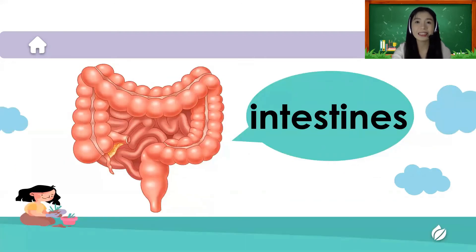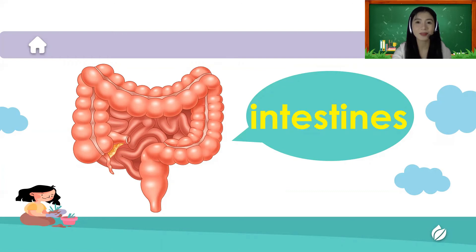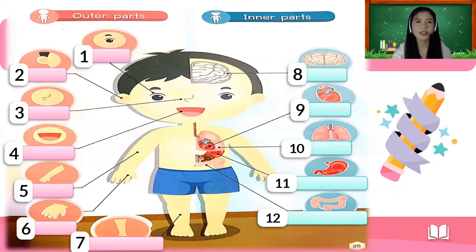And of course we have the intestines. Let's spell the word intestines: I-N-T-E-S-T-I-N-E-S. The intestines absorb the nutrients from the food that we eat — that is the function of our intestines. Those were the outer parts and the inner parts of our body.